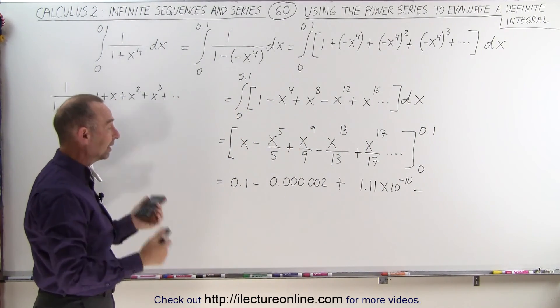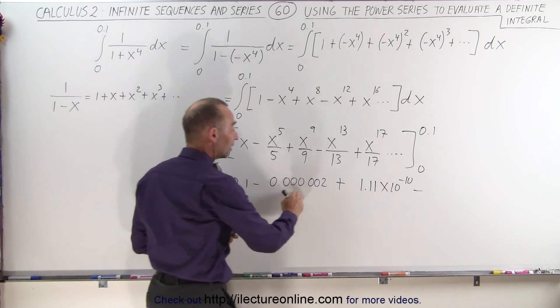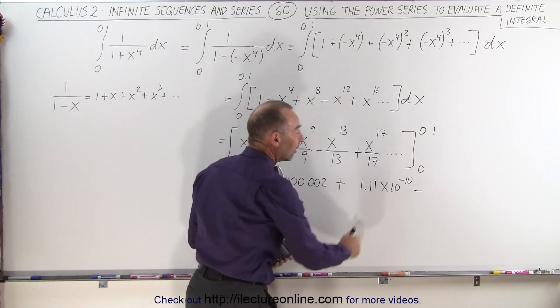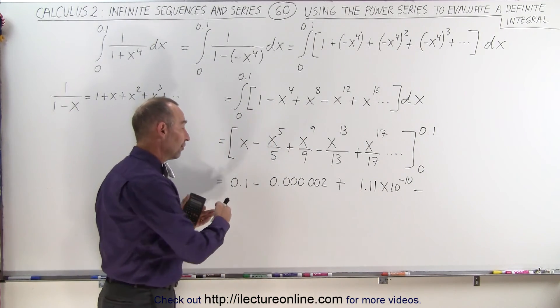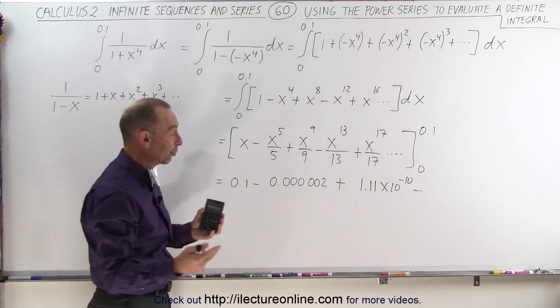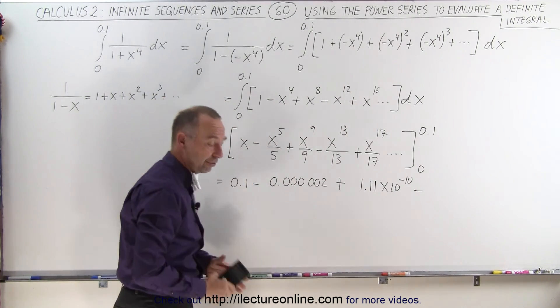In essence, what we can then say is that these consecutive terms, after the first one, become so insignificant that we can just ignore them. Now, of course, if you need many, many decimal places, then you keep them, but typically the numbers we're looking for, this would be sufficient.